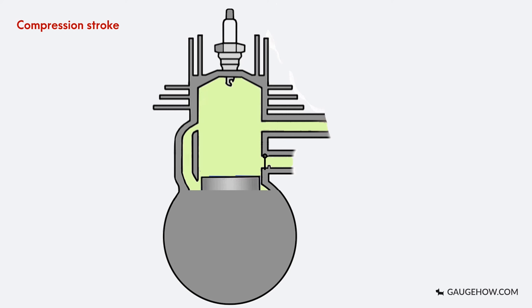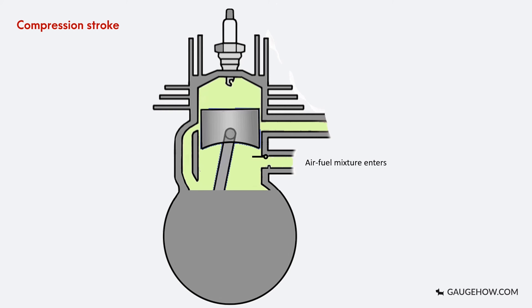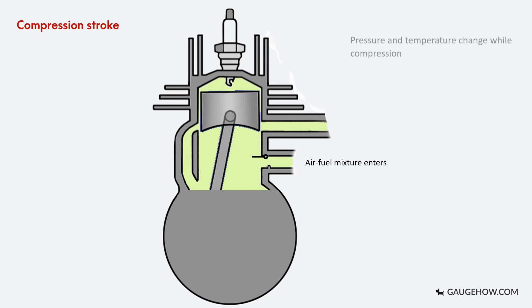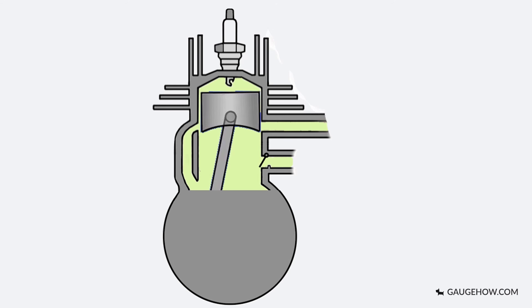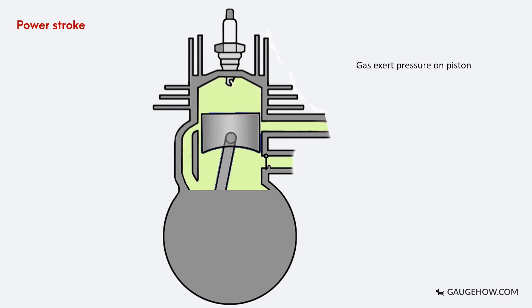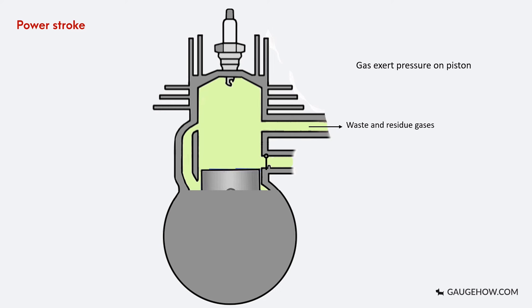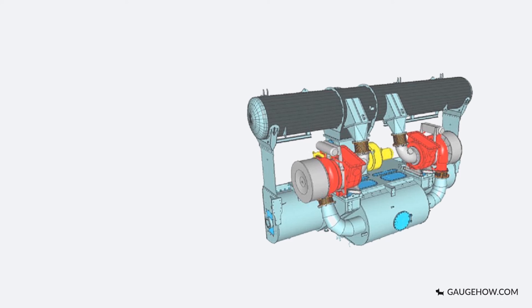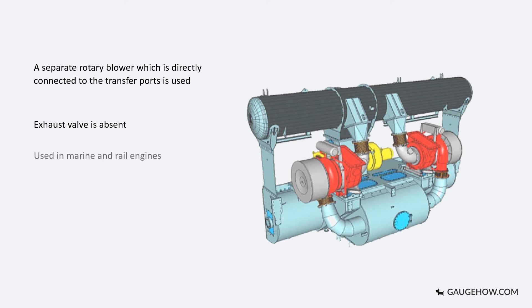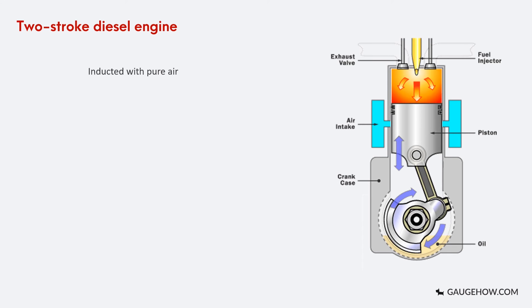In the compression stroke, the spring-loaded inlet port opens, the air-fuel mixture enters the crankcase, and the piston moves upward compressing the mixture. Due to pressure and temperature changes during compression, the gases get heated up. In the power stroke, the heated gases exert high pressure on the piston and it moves downward; waste and residue gases are scavenged. Some two-stroke engines use a separate rotary blower connected directly to the transfer ports instead of the crankcase as the fresh charge pump — exhaust valves are absent in this type and they are widely used in marine and rail engines. Two-stroke diesels are inducted with pure air, not an air-fuel mixture, and fuel is injected only after all ports have closed, which prevents any fuel loss.